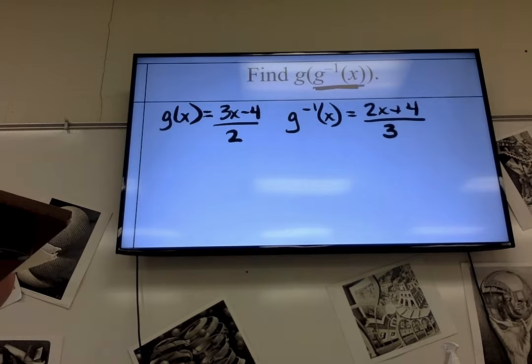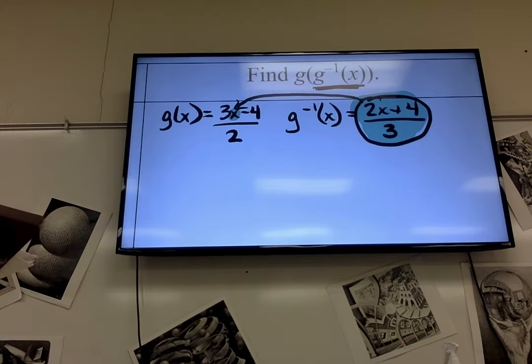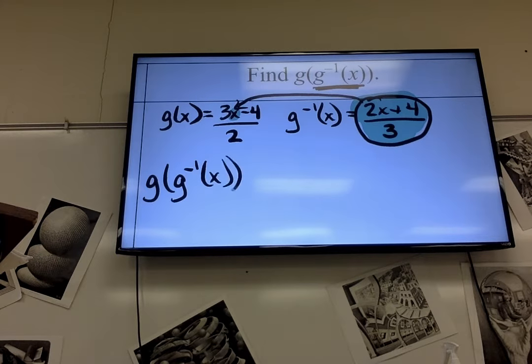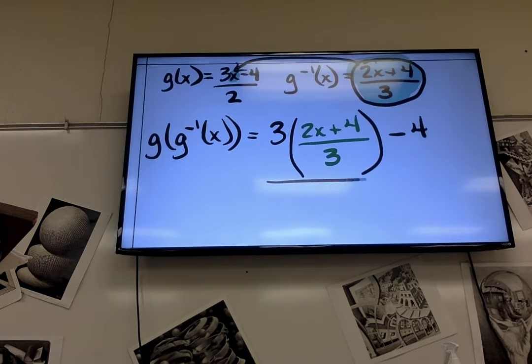The one that's on the inside, I put inside the x for the other equation. So, I'm going to replace that x with 2x plus 4. So, g of g inverse of x means that it's 3 times 2x plus 4 over 3 minus 4 all over 2.